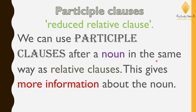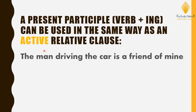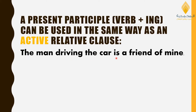We can use participle clauses after a noun in the same way as relative clauses — this gives more information about the noun. Now let's see how these clauses work. Starting with the present participle: a present participle is the verb with -ing added. It can be used in the same way as an active relative clause. That means if we exchange the present participle with a relative clause, the verb has to be in the active form.